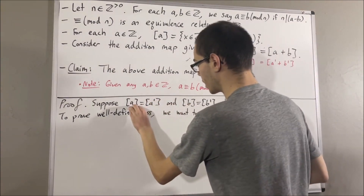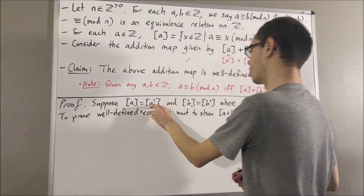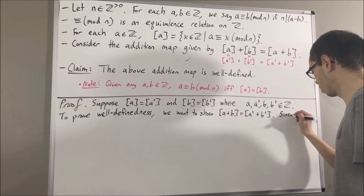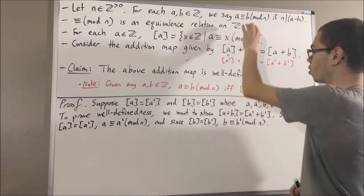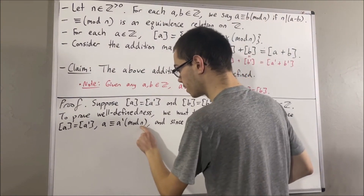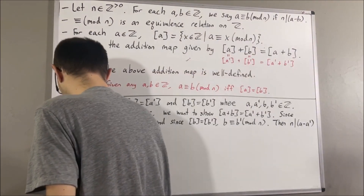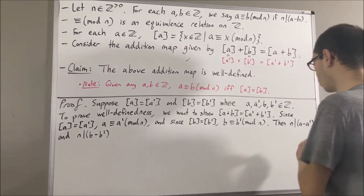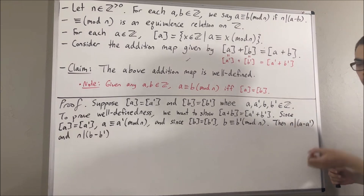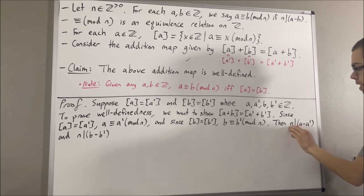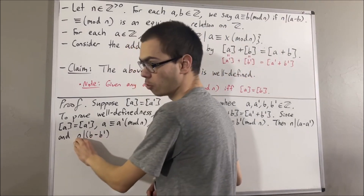To start, since the equivalence class of a is equal to the equivalence class of a prime, that implies a is congruent to a prime modulo n. Similarly, this implies b is congruent to b prime modulo n. And then, according to the definition of congruence modulo n, this means that n divides a minus a prime, and n divides b minus b prime. This means that a minus a prime is equal to n times p for some integer p, and b minus b prime is equal to n times q for some integer q.